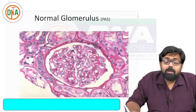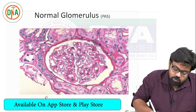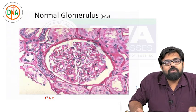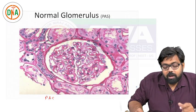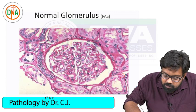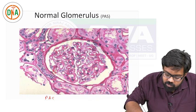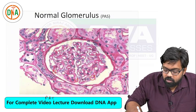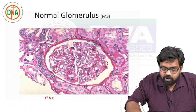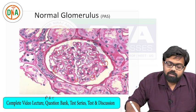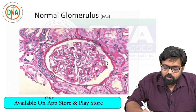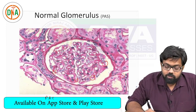Next is the normal glomerulus with a special stain called PAS - periodic acid-Schiff. With PAS stain you can compare the thickness of the glomerular basement membrane with the tubular basement membrane. This is the tubular basement membrane and this is the glomerular basement membrane. The glomerulus still looks normal with no pathology identified. So this is the normal PAS of a glomerulus.